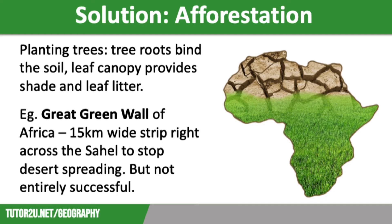The Great Green Wall is an example of an initiative where countries are working in partnership with one another. Eleven countries signed an agreement in 2010 to begin planting this wall. The plan is to plant a 15 kilometer wide strip of land with trees and shrubs across the entire width of Africa. It is hoped that the wall of vegetation will prevent further soil erosion from the Sahel and improve incomes.